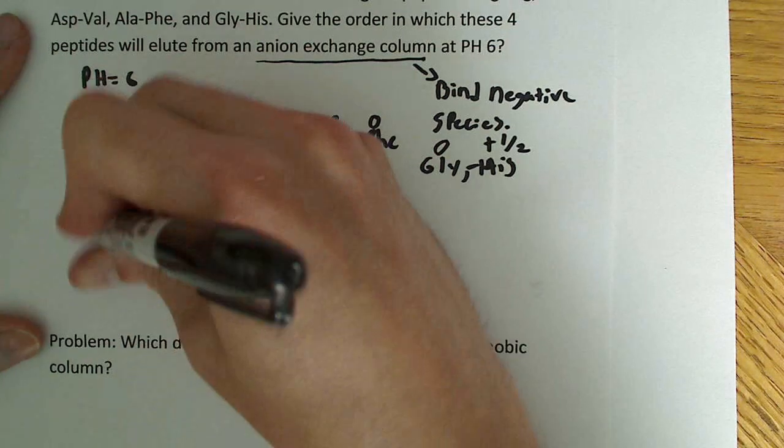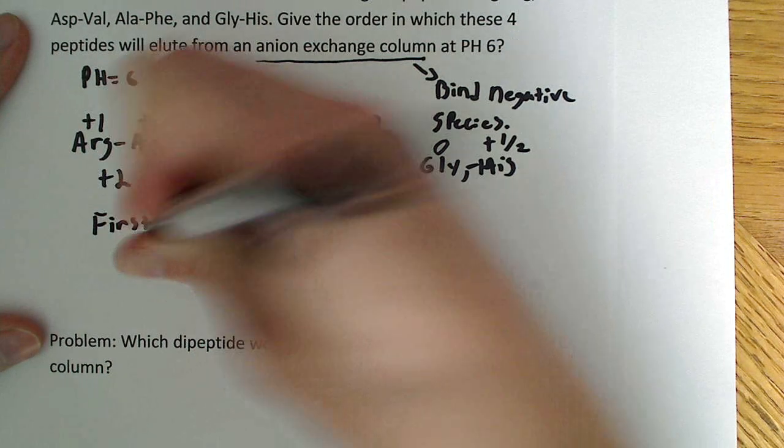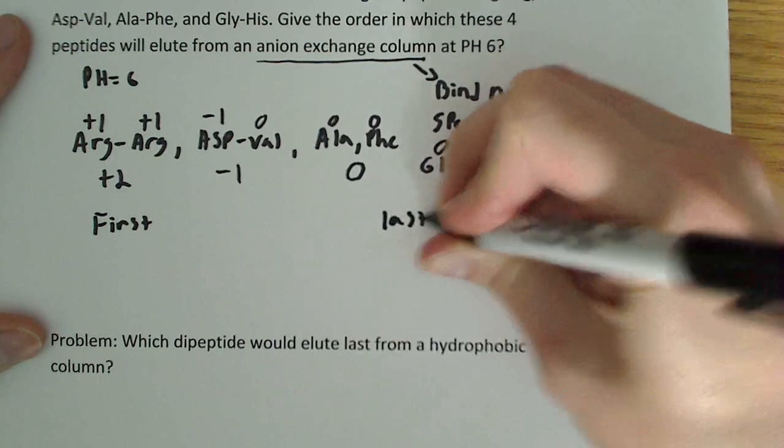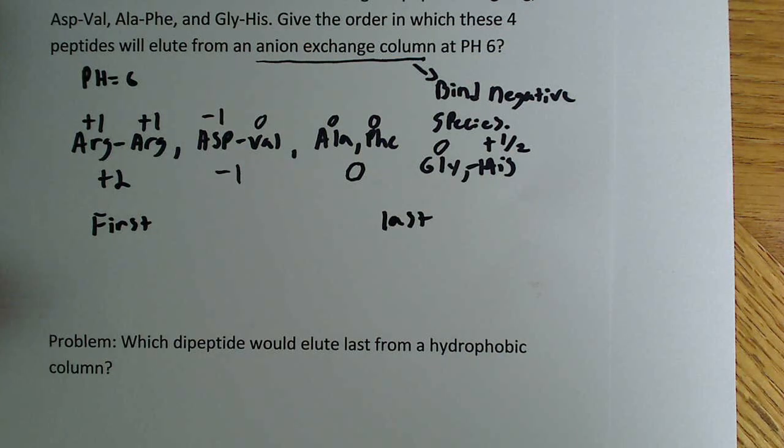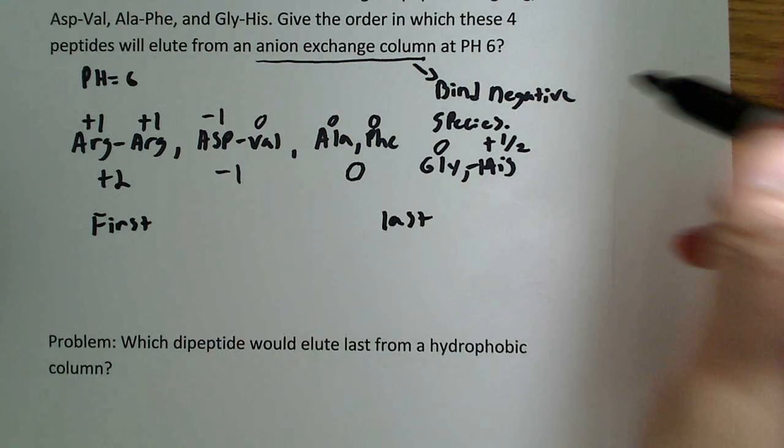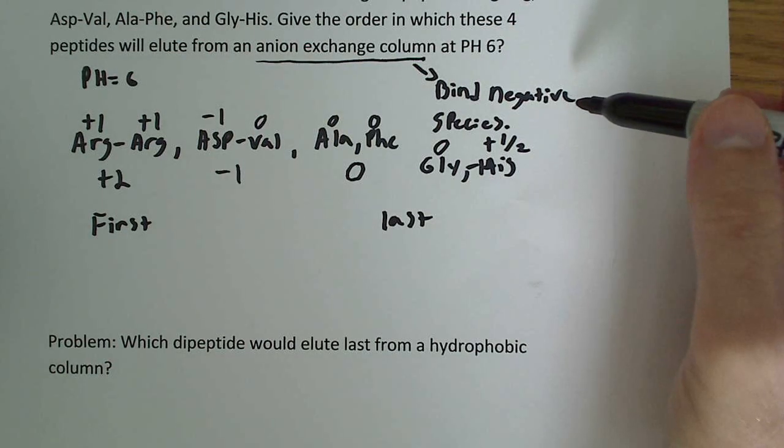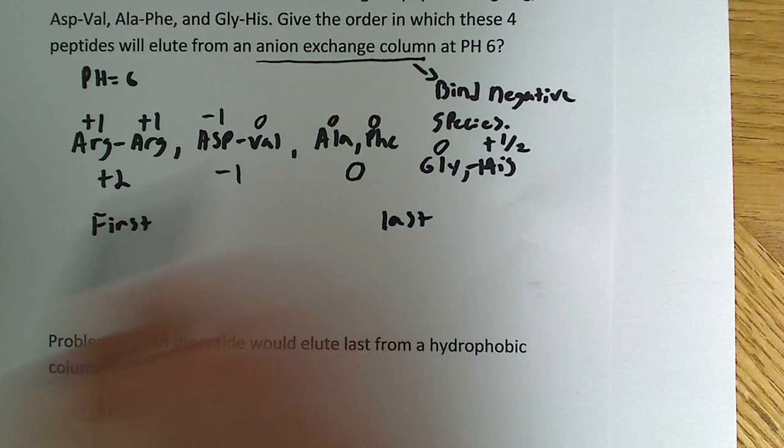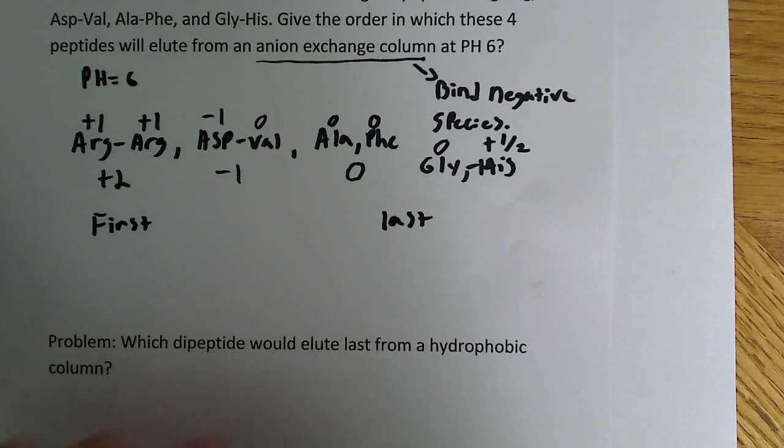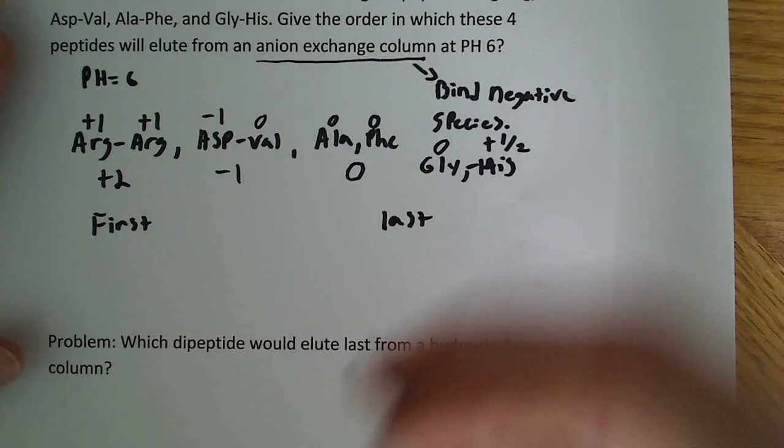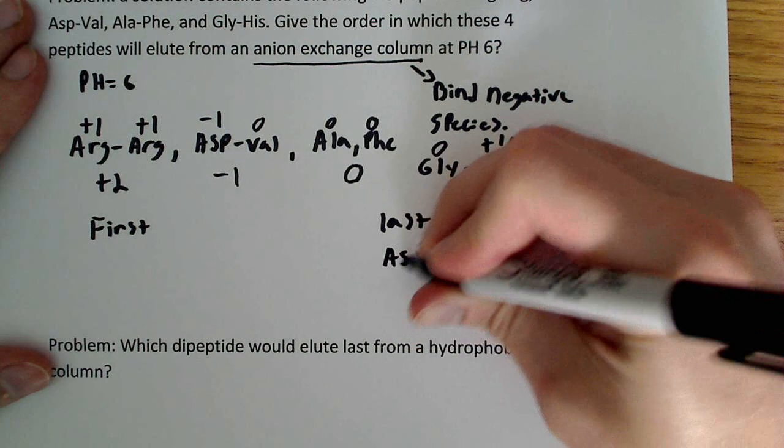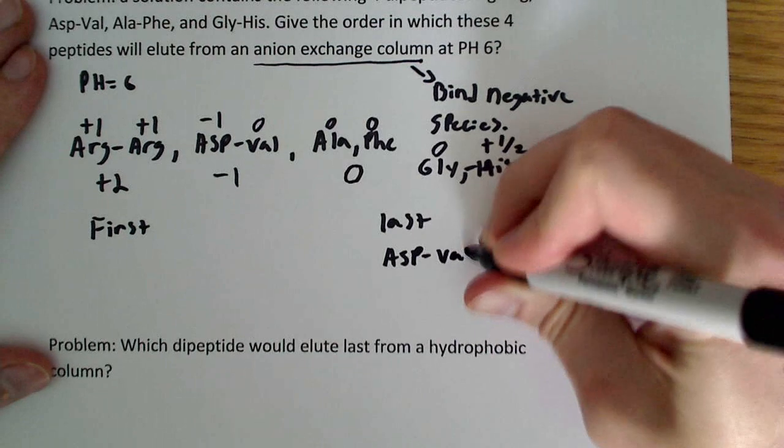The next thing I would do is say first and last. The first thing I would look at is go back to what I know to begin with: it binds negative species tightest. I would look to see if any of these have negative charge. We only have one with a negative charge, and this is aspartic acid-valine. So we already know automatically that that's the last one to elute.